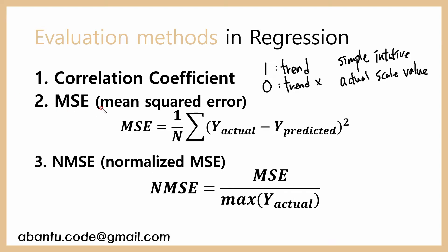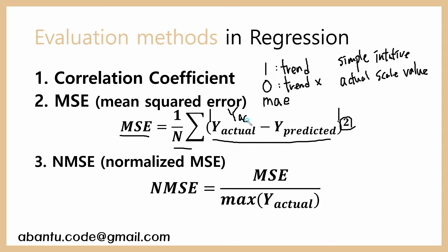Another method is mean squared error (MSE). Using the difference between the actual value and predicted value, squaring it, and taking the mean, we can get the MSE value. Using that, we can know the exact difference between actual and predicted values. Sometimes the mean absolute error (MAE) can also be used — in this case, the difference is just the absolute value. So both are used widely.